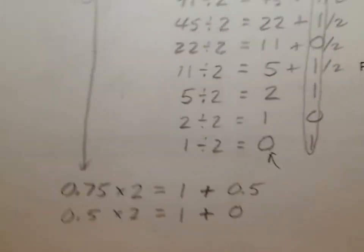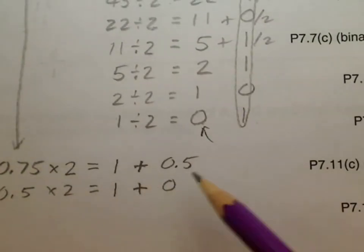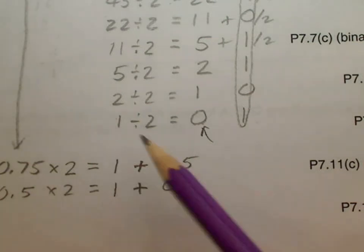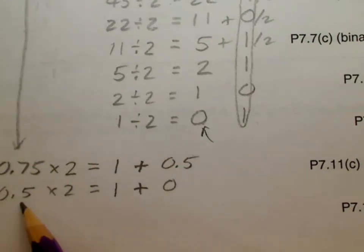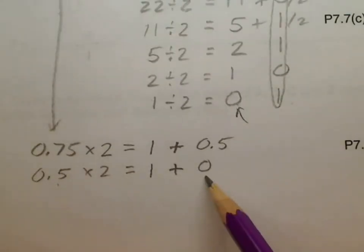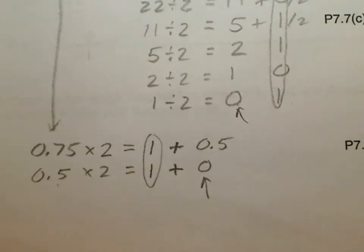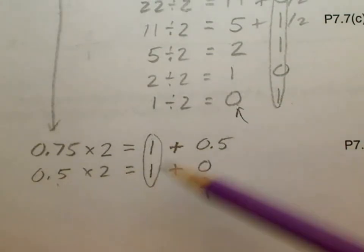And then to deal with the fractional part of that, the .75, you multiply it by 2 and you get 1.0 and that's the time that you stop when this one becomes 0. And then you basically got the 1 and the 1.